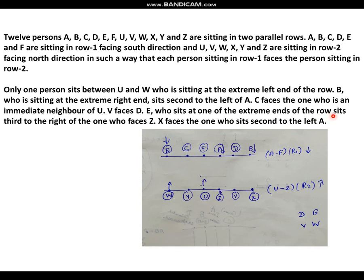V faces E, who is at one of the extreme ends of the row. Since B is at the extreme right end, E must be at the extreme left end. E sits third to the right of the one who faces Z — fix Z's position accordingly. X faces the one who sits second to the left of A, which is B — so X faces B. The remaining members V and D go into the fifth position. All positions are now fixed.